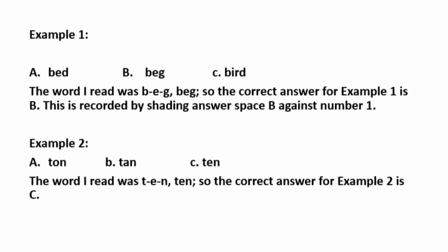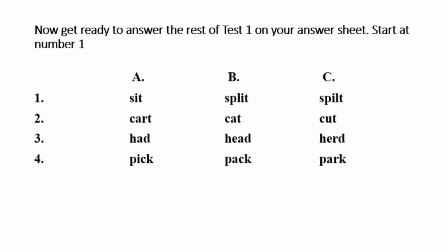Example 1. Beg. The word I read was B-E-G, beg. So the correct answer for example 1 is B. This is recorded by shading answer space B against number 1. Example 2. Ten. The word I read was T-E-N, ten. So the correct answer for example 2 is C. Now get ready to answer the rest of test 1 on your answer sheet.